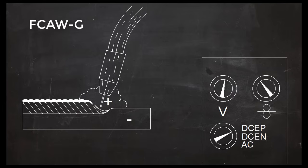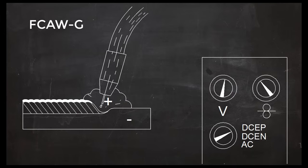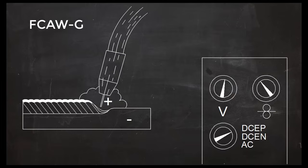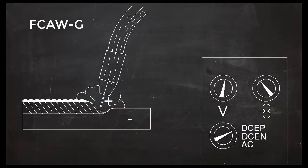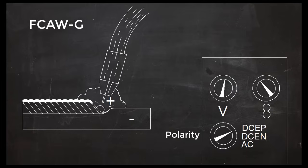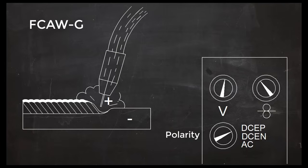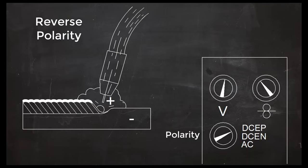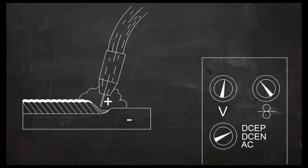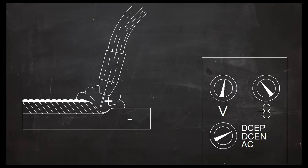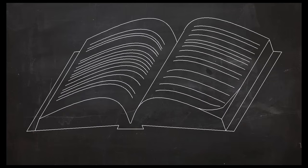In gas-shielded flux core welding, the electrode is usually positive and the workpiece negative. The term for this is DCEP, indicating that the current is DC and the electrode is positive. This is also called reverse polarity, but DCEP is a more descriptive term. Keep in mind that these are the most common settings and always check your manufacturer's recommendations.